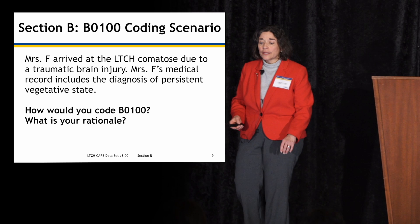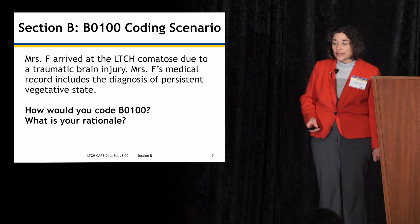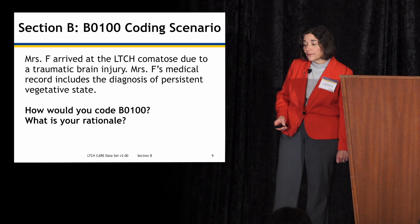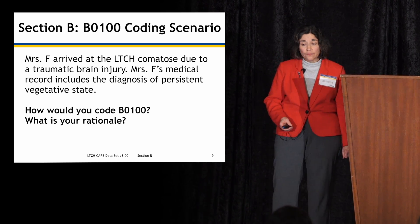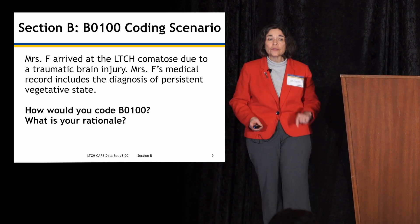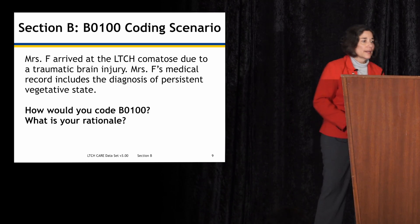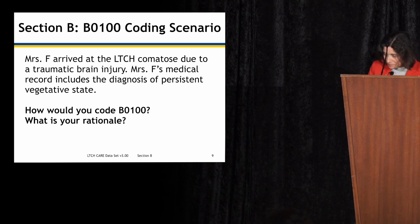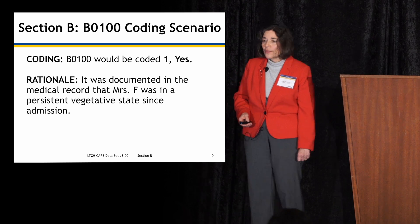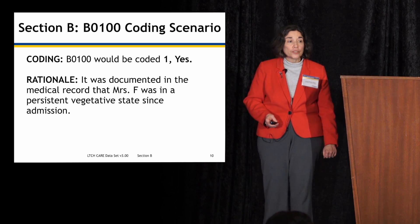Coding scenario for B0100: Mrs. F has arrived at the LTAC and she's comatose due to traumatic brain injury. Mrs. F's medical record includes a diagnosis of persistent vegetative state. How would you code B0100? The answer is 1 — yes — because it is documented in the medical record that Mrs. F was in a persistent vegetative state when she arrived.